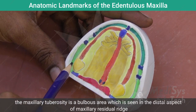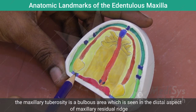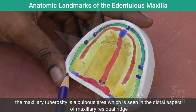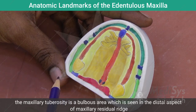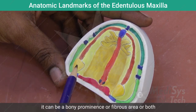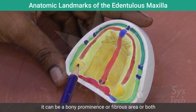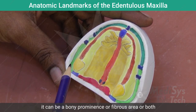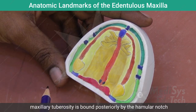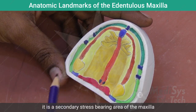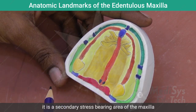The maxillary tuberosity is a bulbous area seen in the distal aspect of the maxillary residual ridge. It can be a bony prominence, a fibrous area, or both. The tuberosity is bound posteriorly by the hamular notch and is the secondary stress bearing area of the maxilla.